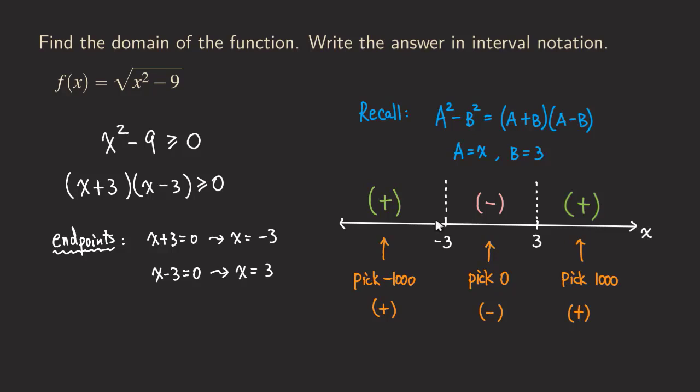So once we get that, then we can ask ourselves, which interval of x values will satisfy the inequality? Well, we want that to be greater than or equal to zero. So what does that mean? That means we want the positive intervals. So those two are the ones that we want.